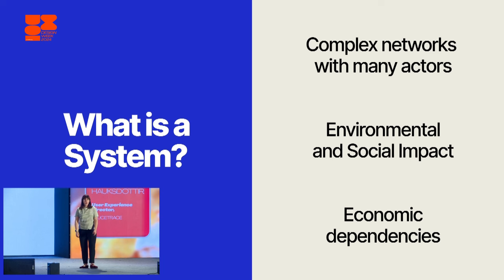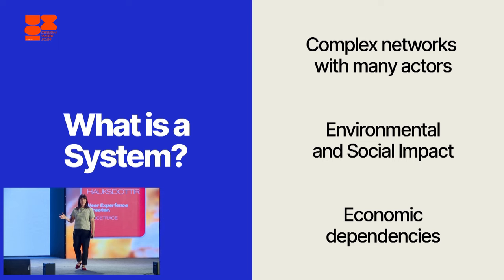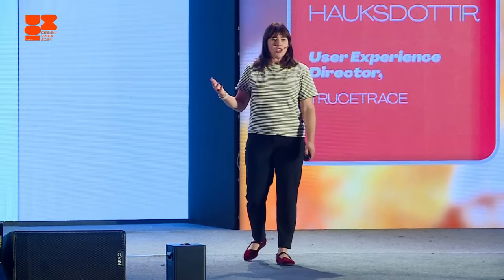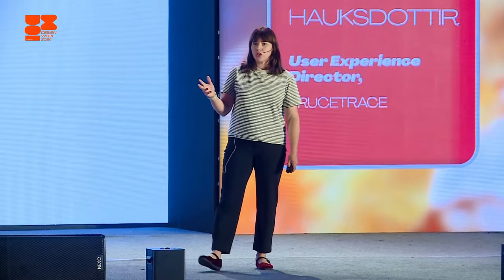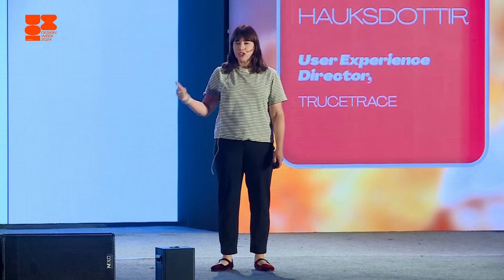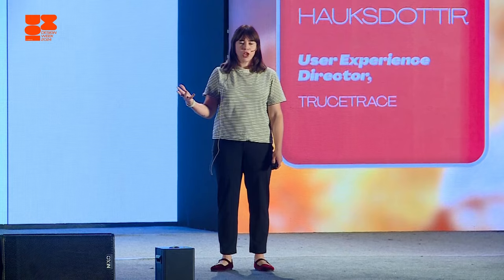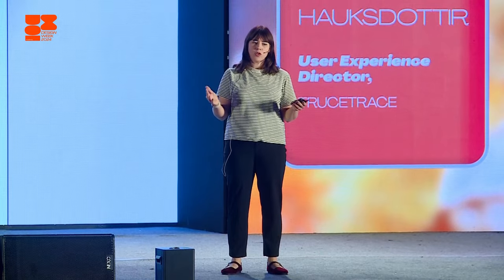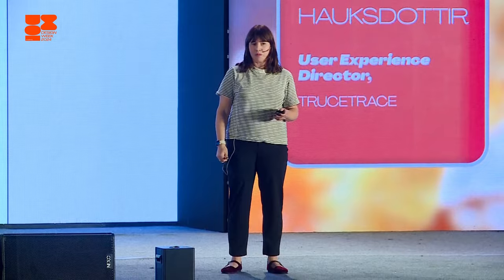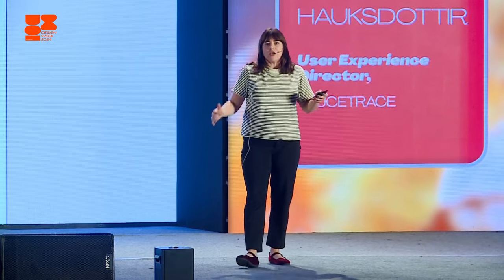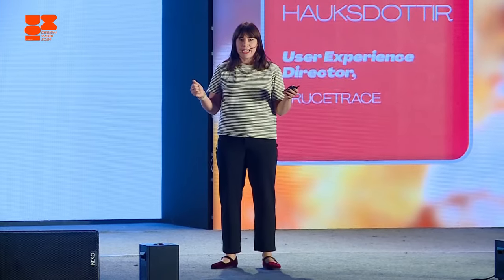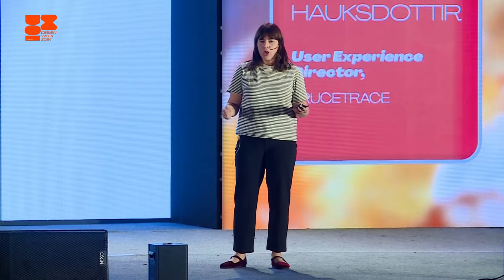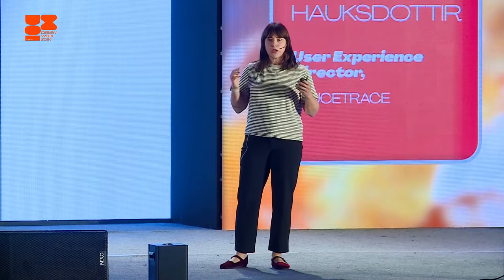But before we dive into TrustTrace, I want to align us on what are systems and what are broken systems. A system is a complex network with many actors. We probably interact with multiple systems during our day — it might be transportation, banking, healthcare, or education. These are the fabrics of our lives. And because they're often vast and complex, they also have environmental and social impact involved, and economic dependencies. There's usually someone in the system who benefits from it and someone who does not. And something curious about systems is they're kind of an organic being that tries to maintain its status quo — the system doesn't want to change itself. So we inject innovation and regulation to try to affect it.